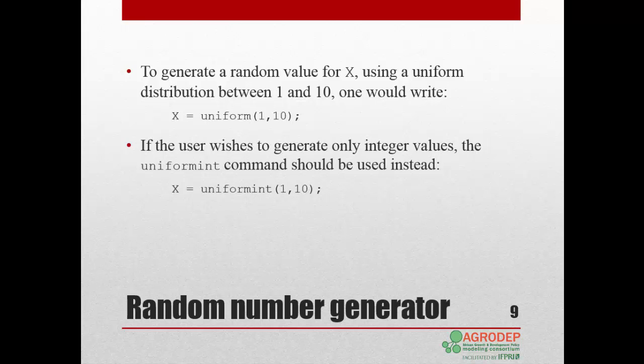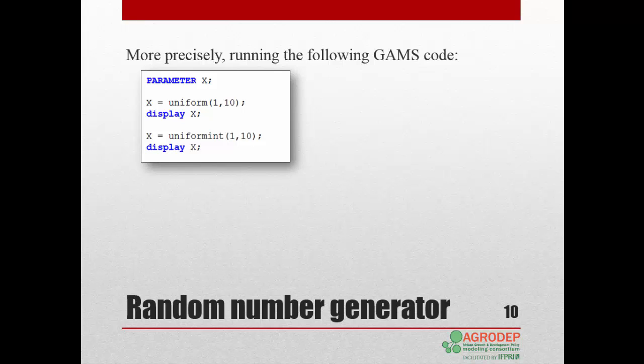To generate only integer values, we use the uniformint distribution function and specify again the minimum and maximum values that X can take. In GAMS IDE, we would write and run the following code: declare parameter X, assign the value of uniform distribution with minimum 1 and maximum 10 to X, and display X. Next, assign the value of uniform distribution of integer with minimum 1 and maximum 10 to X, and display X with its new values.